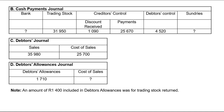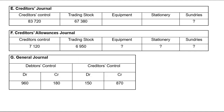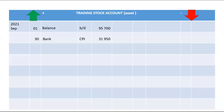Another way we can buy trading stock is on credit. We'll find that information in our creditors journal — we look for the trading stock total. The trading stock total in our creditors journal is 67,380. We'll put that on the debit side of the trading stock account and write 'creditors control CJ' with the amount of 67,380.